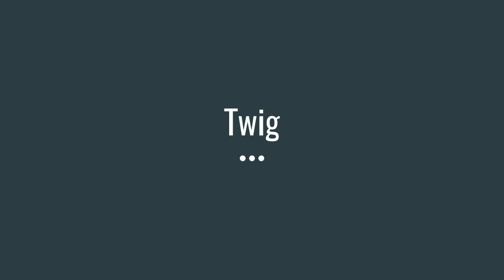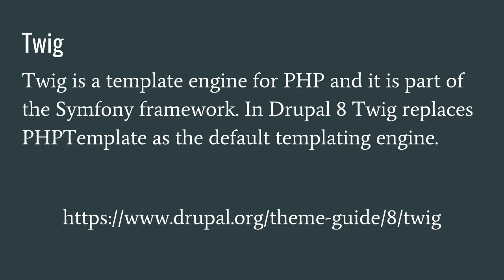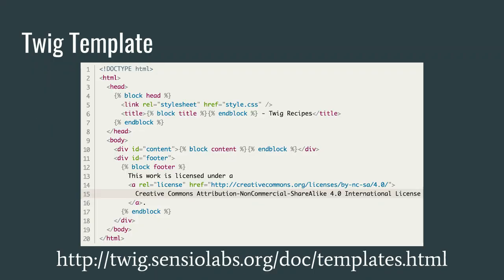Now let's talk about Twig. Twig is a templating engine for PHP. It is part of the Symfony framework, which was adopted in Drupal 8 and replaced PHP templates from Drupal 7. Twig is not exclusive to Drupal — it is used in many other projects. In a Twig template you have markup and a special syntax: curly-bracket percent sign for logic tags, double curly brackets to print variables, and curly-bracket hashtag for comments. Everything else is just regular HTML. You can embed CSS or JavaScript inline in the template, although Drupal provides better ways to do that.